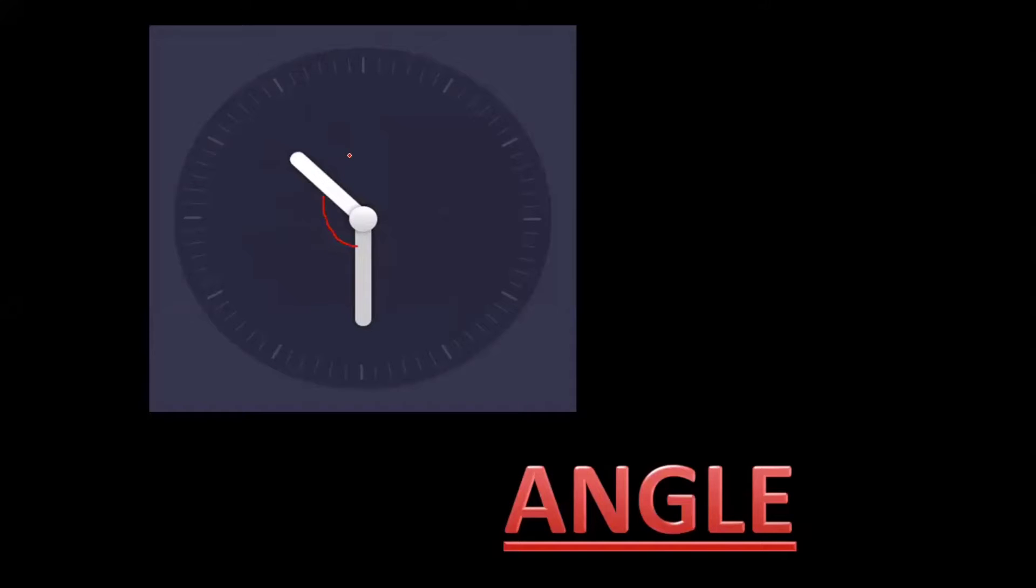Angle is nothing but this. It is formed with the help of two rays which meet at a common point. Here the two rays are these two and the common point is the center circle. Angle falls under a very important concept which is geometry, and this is very important for your higher grades as well.